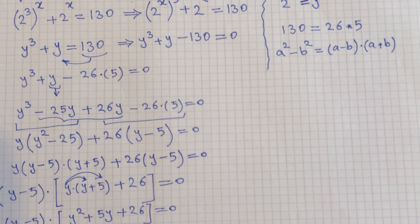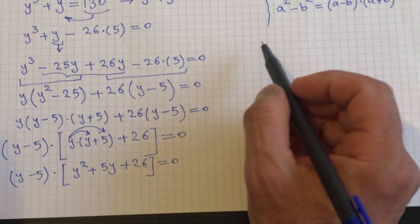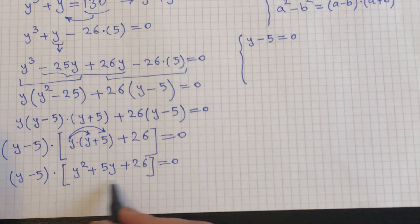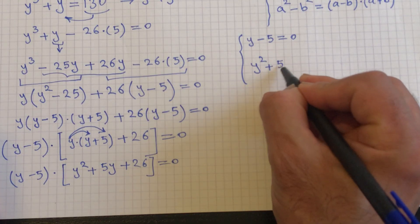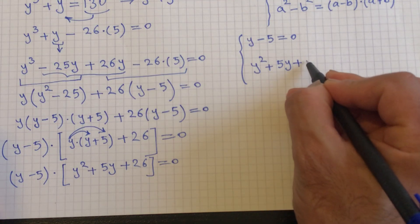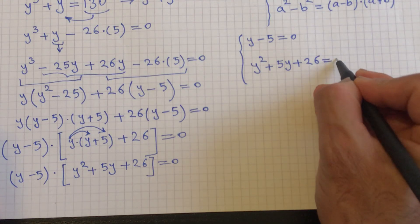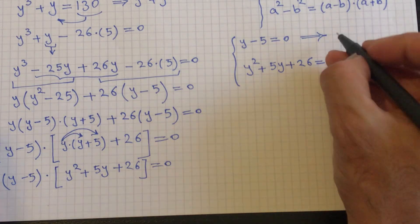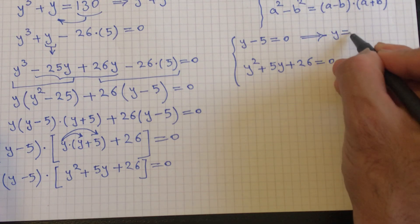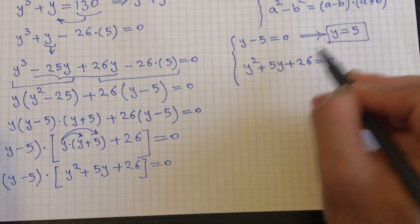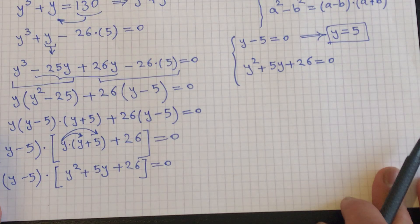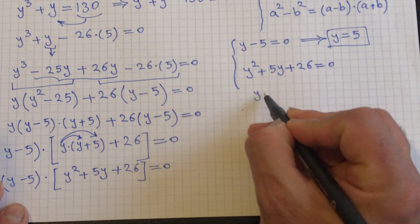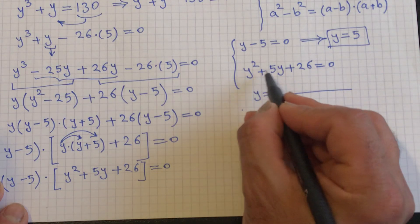Now we have two possible answers. The first equation is y minus 5 equals 0, and the second is y squared plus 5y plus 26 equals 0. From the first equation, we conclude y equals 5.